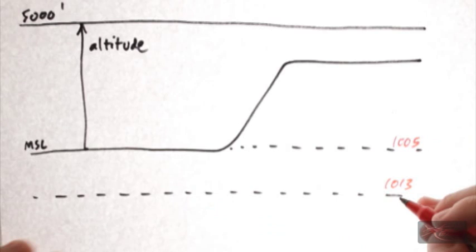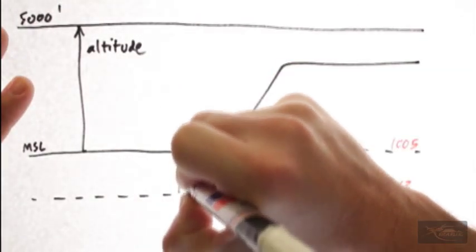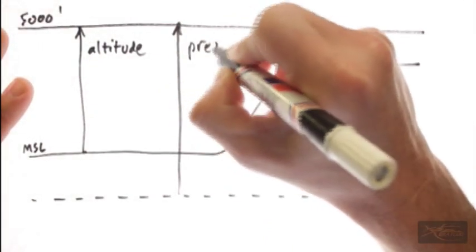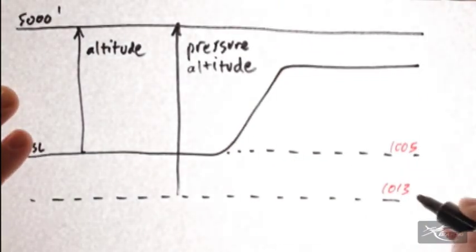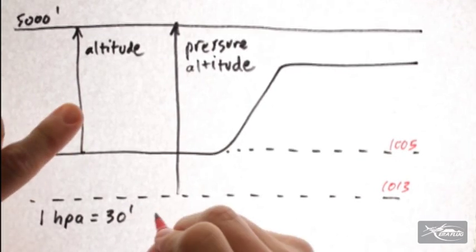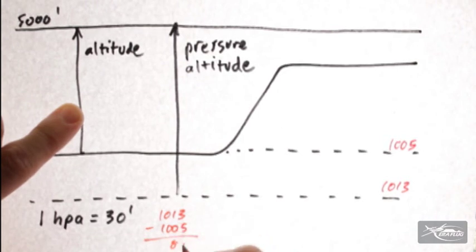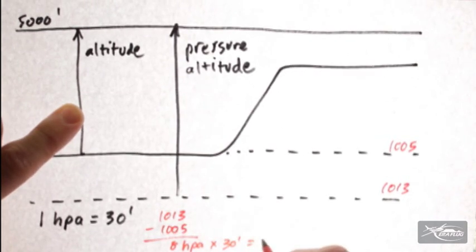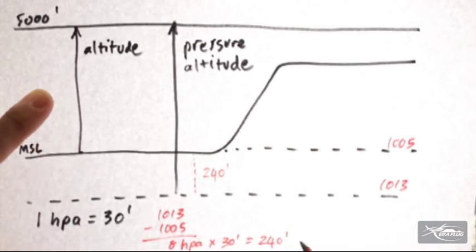And we can see then if the sea level pressure is 1005, it stands to reason that 1013 must be lower because the air is denser the lower you go. So in this case, for the purposes of our calculation, 1013 hectopascals is below sea level. We are trying to establish what our pressure altitude is going to be in this example. One hectopascal will equal 30 feet. So we can see there's a difference between 1013 and 1005 of 8 hectopascals times 30 equals 240 feet.